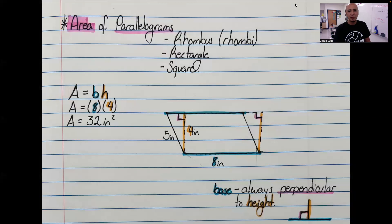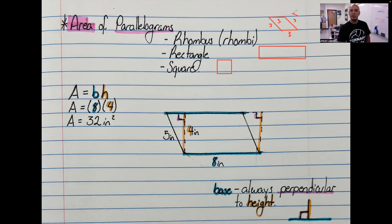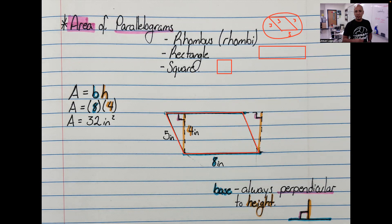A parallelogram is a shape where opposite sides are parallel — like a rectangle or a square, but also like a rhombus. A rhombus looks like a diamond where all side lengths are the same, for example three meters on every side. Think of it as a square that somebody sat on so it's now slanted. You also have general parallelograms — not a rhombus, not a square, not a rectangle — just a shape where opposite sides are parallel and equal in length.